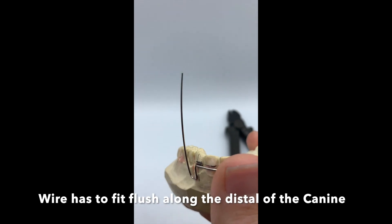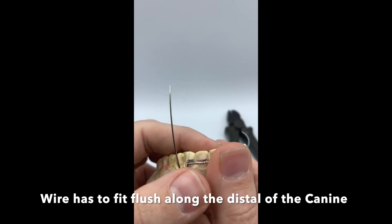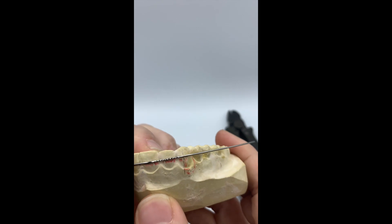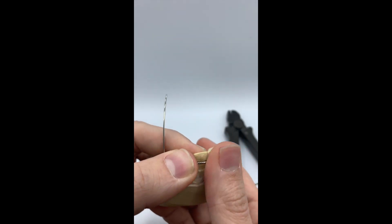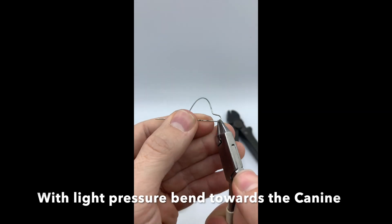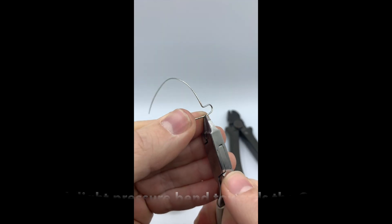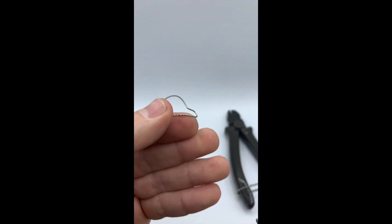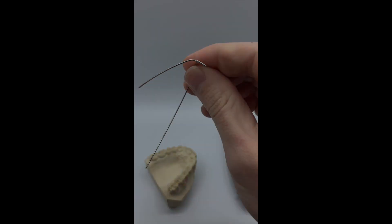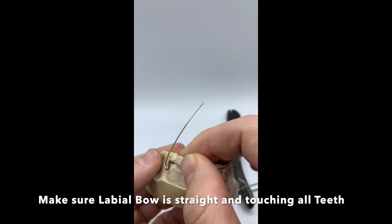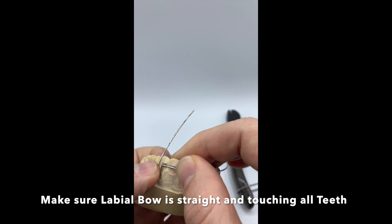We want the wire to touch along the distal of the canine. In a short series of bends with your plier, bend it towards the canine. You want to bend with light pressure so that it is passively touching the canine. Note, always hold the wire with the plier and bend with your fingers.